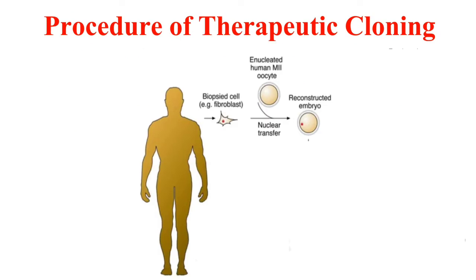This is the procedure of therapeutic cloning. Similarly to SCNT, first the egg cell is taken from the donor animal and its nucleus is removed to create the enucleated egg.